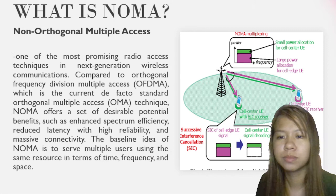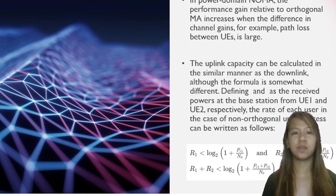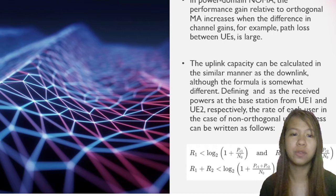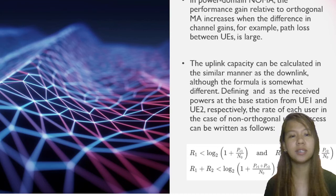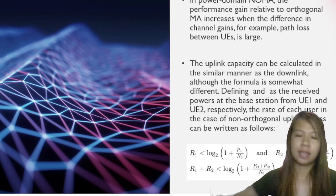In power domain NOMA, the performance gain relative to Orthogonal MA increases when the difference in channel gains — for example, path loss between UEs — is large. The uplink capacity can be calculated in a similar manner as the downlink, although the formula is somewhat different. Defining the received powers at the base station from UE1 and UE2 respectively, the rate of each user in the case of Non-Orthogonal Multiple Access can be written as follows.